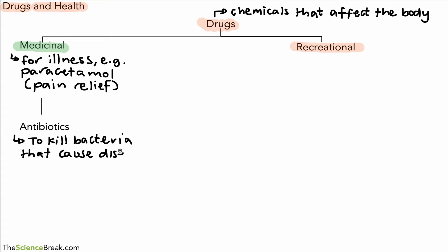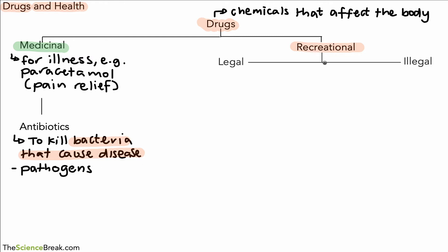It might be useful to introduce a key term here. Bacteria that cause disease are often referred to as pathogens. It's not just bacteria — it could be other microorganisms as well — but bacteria that cause disease are called pathogens.